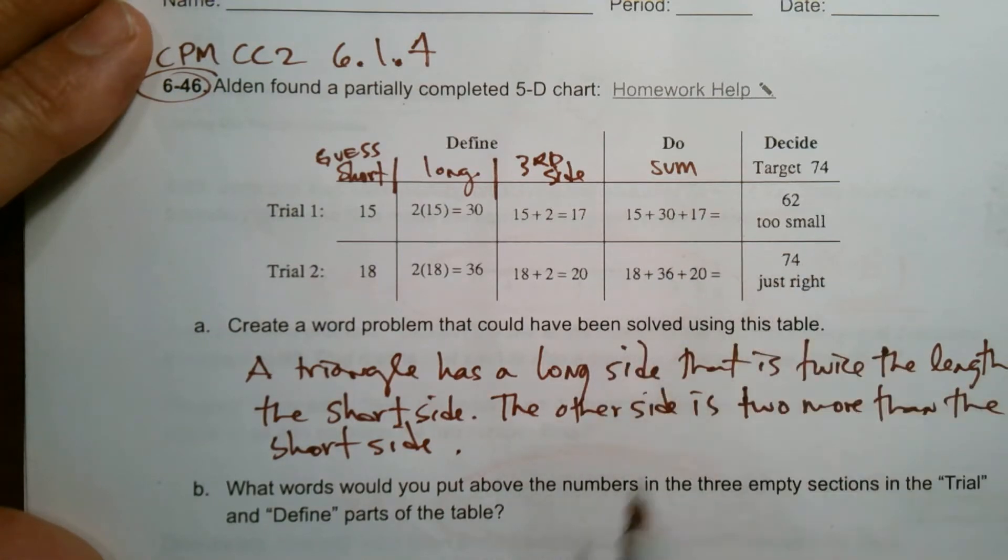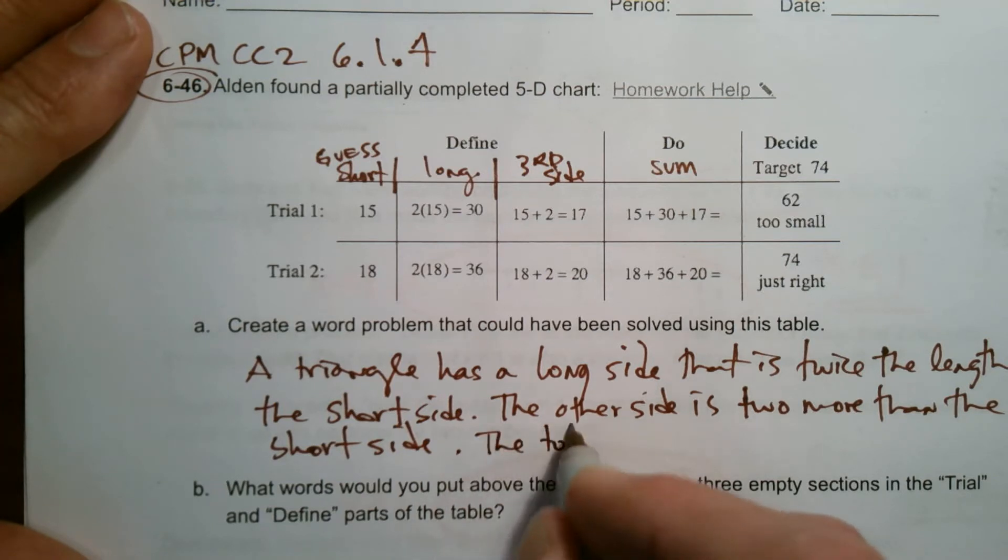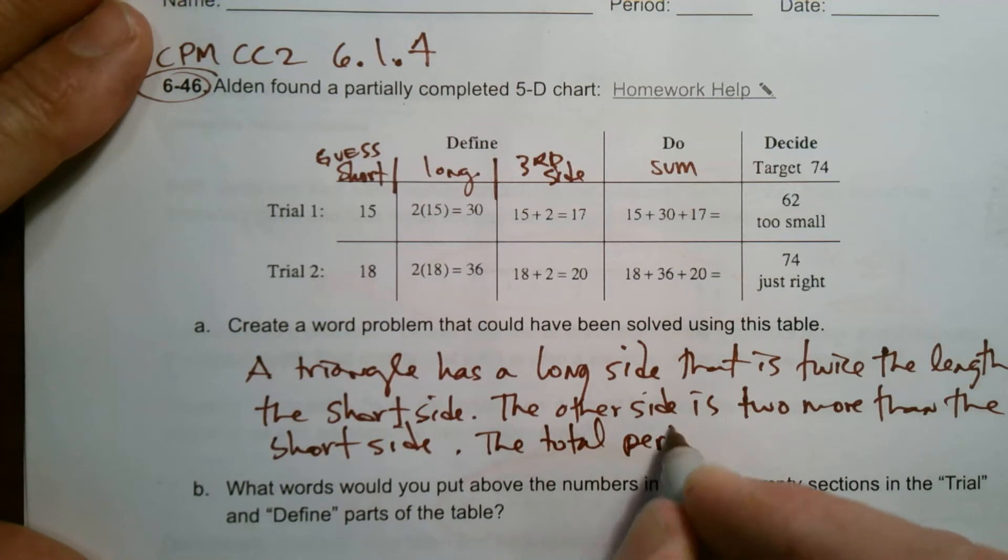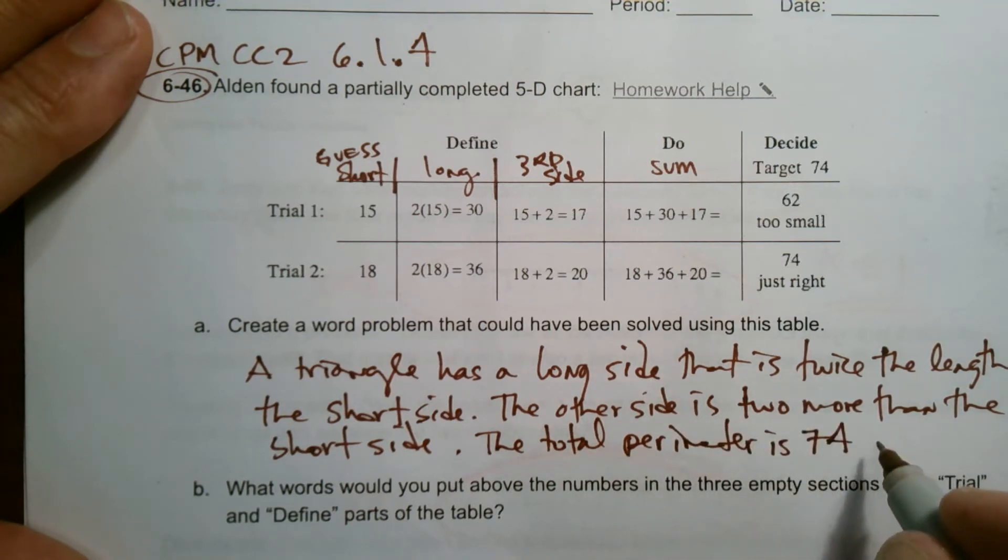And then the last thing is, what do we know? If I add them all up, I get 74. So that would mean that the total perimeter is 74 units, whatever the units - you could say centimeters, feet, inches.